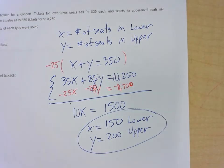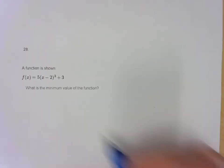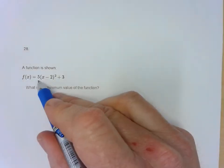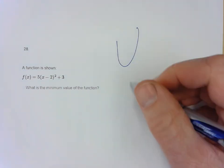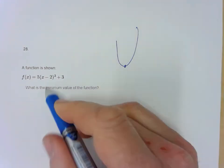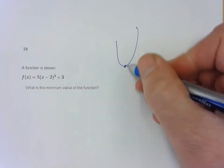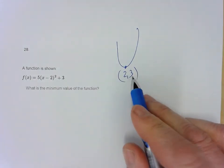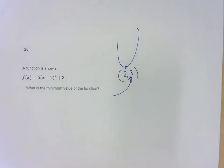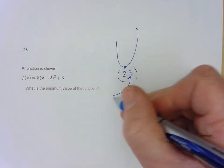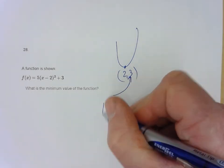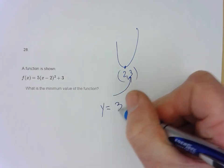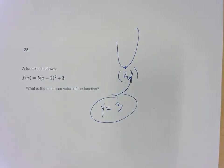Question 28: This parabola is in vertex form and faces up. The vertex is at (2, 3). The minimum is the y value of the vertex, so the minimum of the function is y equals 3.